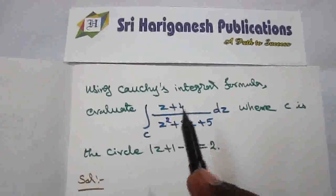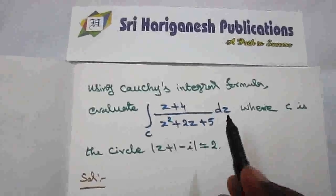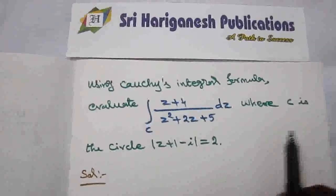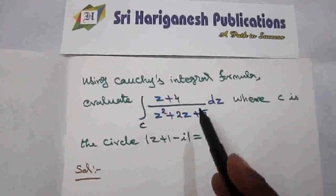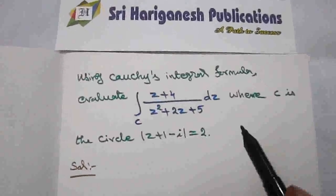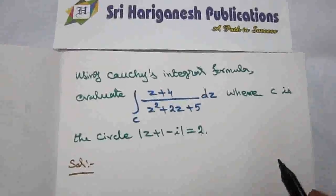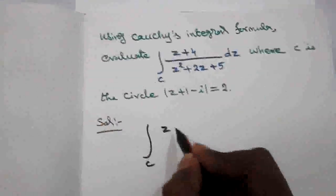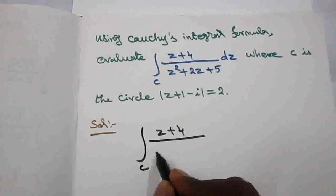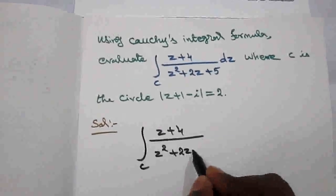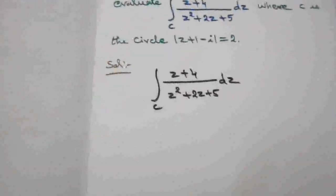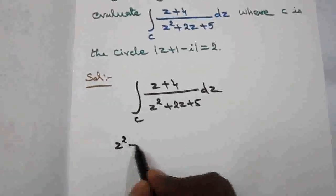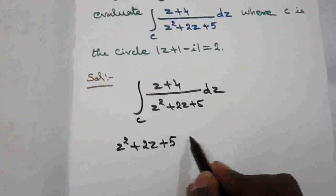Now we evaluate the integral over C of (z + 4) / (z² + 2z + 5) dz, where C is the circle |z + 1 - i| = 2. First, find the singular points by equating the denominator to zero: z² + 2z + 5 = 0.